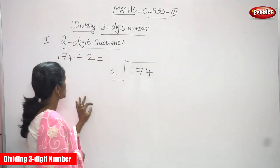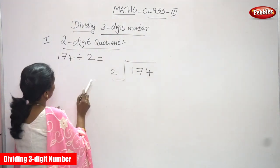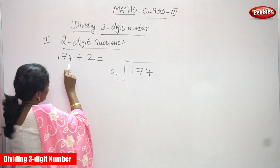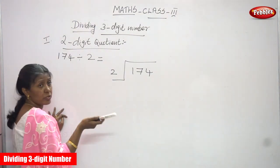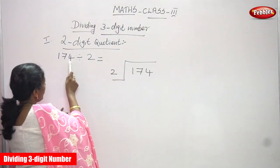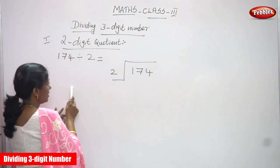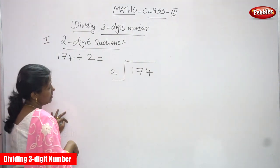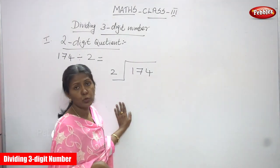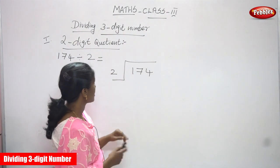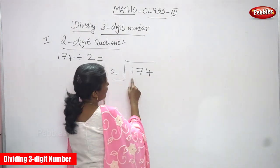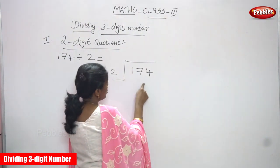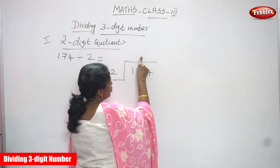Now we are going to see two-digit quotients. So 174 — the dividend is a three-digit number, but the quotient is a two-digit number — that is the difference. This number is going to be divided by a single-digit number, but the quotient you get is a two-digit number.